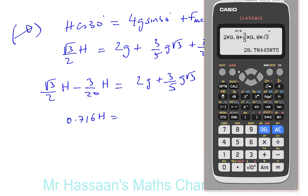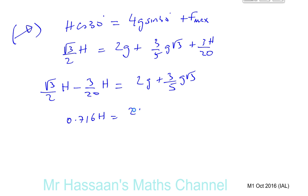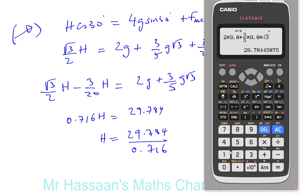And you're going to divide that by 0.716. So you have, so that's 29.784. Let me write that down. 29.784. So H is going to be 29.784 divided by 0.716.